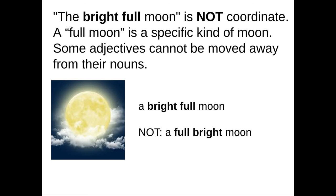Here's another example: 'the bright full moon.' Not coordinate. A full moon is a specific kind of moon — you don't want to move that adjective away from the noun. Full is the more important adjective. You would say 'it was a bright full moon,' but you would not say 'it was a full bright moon.' It doesn't make sense. Those are not coordinate. Don't put a comma.